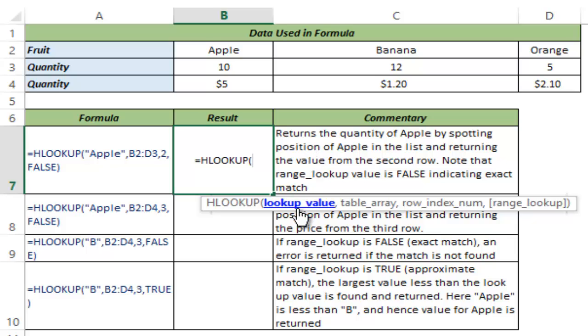HLOOKUP function takes four arguments. The first one is the lookup value. Second is the table array where you want to look for the value. Third is the row index number, the row number from where you want to fetch the value and fourth is a range lookup where you're looking for an exact match or an approximate match. Let me show you how this works.